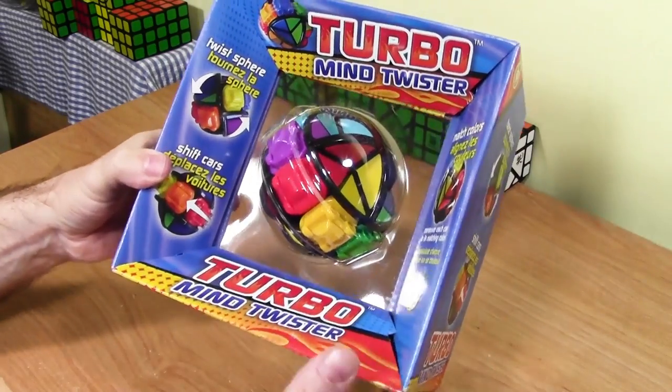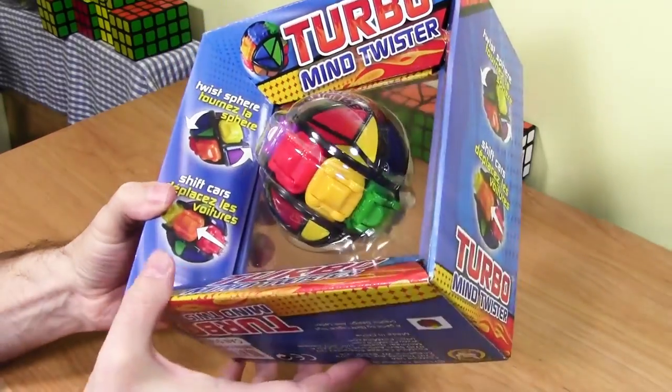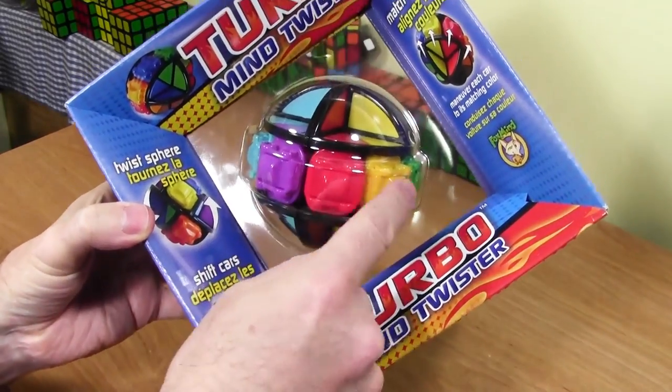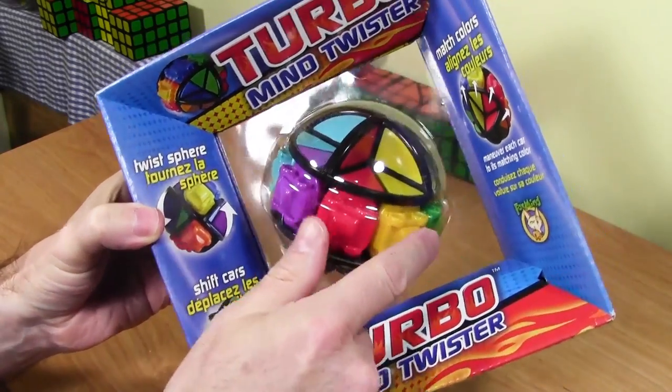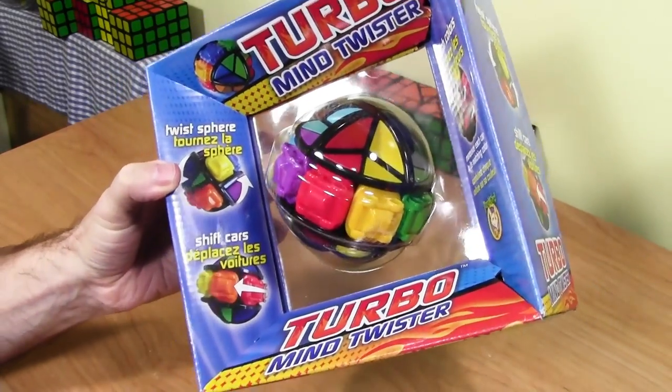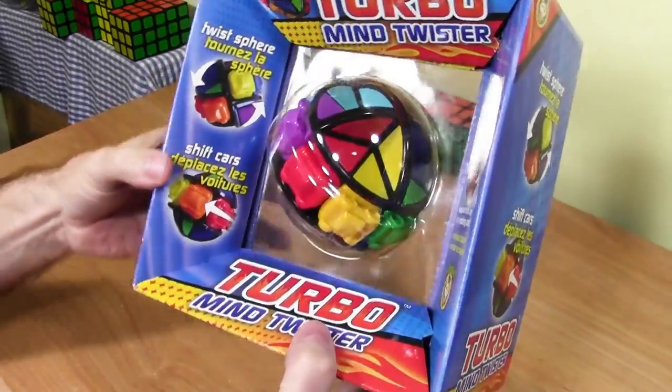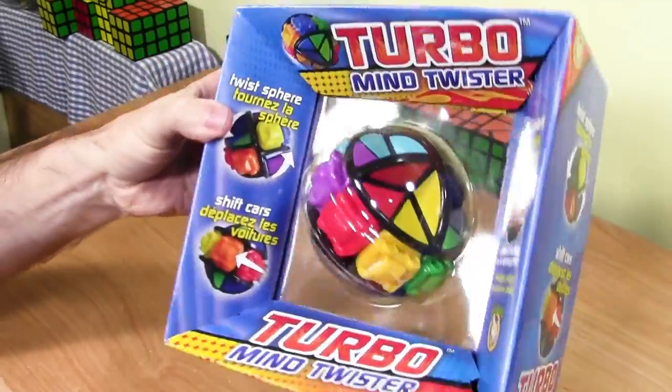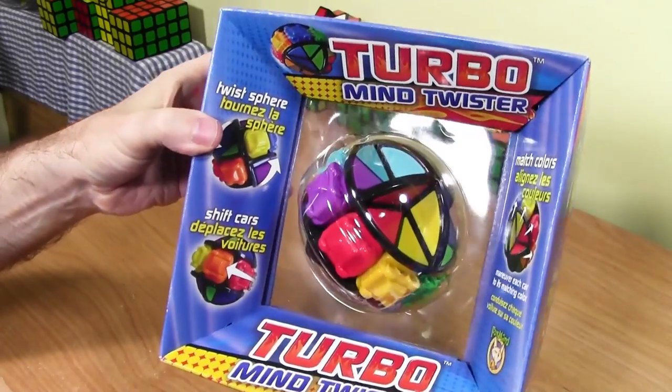So one of the items I saw was this Turbo Mind Twister, and it appealed to me because around the equator here, when there's a Mind Twister, these are little cars, and they really kind of intrigued me. So I had a closer look at it, and for a mall kiosk, the price wasn't too bad, and we'll get to that.